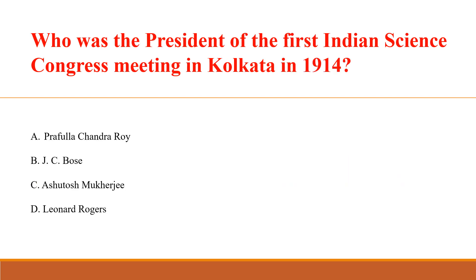Who was the president of the first Indian Science Congress meeting in Kolkata in 1914? Answer C: Ashutosh Mukherjee.